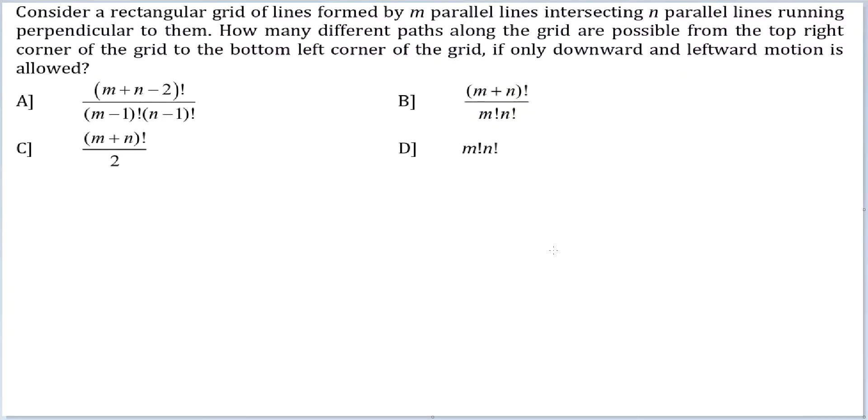Let's look at this question. Consider a rectangular grid of lines formed by m parallel lines intersecting n parallel lines running perpendicularly. How many different paths along the grid are possible from the top right corner of the grid to the bottom left corner of the grid if only downward and leftward motion is allowed? This is a general setup.